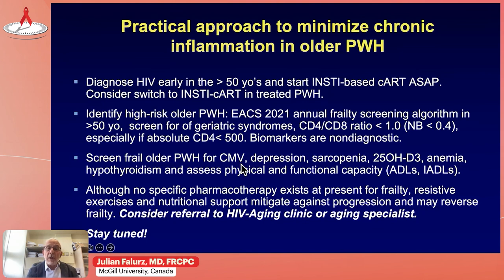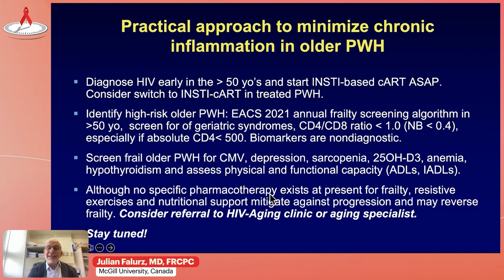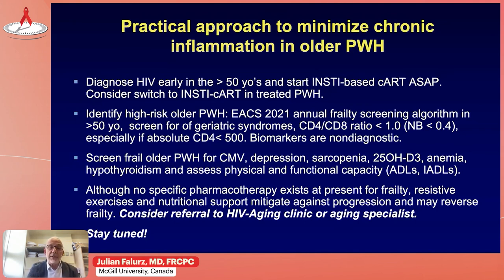Older patients should also be screened for CMV, depression, and other contributors which can impact quality of life and functional capacity. Although no specific pharmacotherapy currently exists for frailty, other than preliminary geroscience model studies, we know that in the general population resistive exercises and nutritional support do mitigate against progression of frailty and may actually reverse it in some situations. Consider referral to an HIV and aging clinic or an aging specialist.